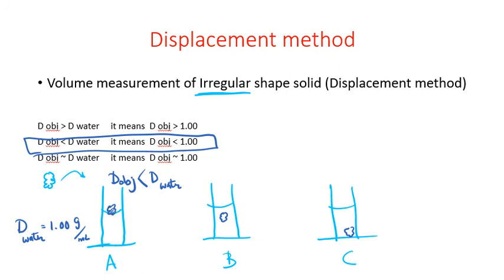If it remains on the top, we say our object is going to float. Water and object on top — we call that floating, and it means the density of the object is less than 1.00. If our object is going to be on the bottom of the container, then we move to the next case.